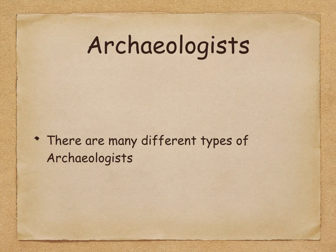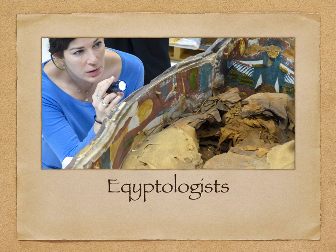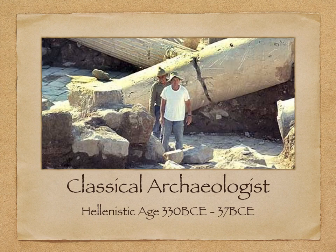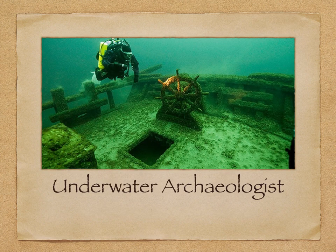Let's look at some of the archaeologists you might come across. First, we have Egyptologists — the meaning is in the name — these people specifically study Egypt and are experts in everything to do with it. We also have classical archaeologists; this photo is taken from Greece, and there is a specific time period for the Hellenistic age, which is ancient Greece. We also have underwater archaeology — there's a man examining a boat that sunk to the bottom of the ocean, as lots of material has been submerged in the sea over time.